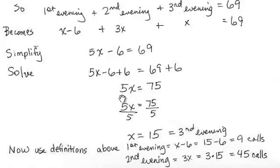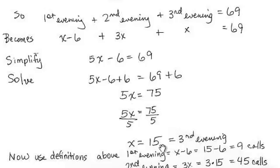We want to get X alone, so we're going to divide by 5. 5X over 5 equals 75 over 5. Five over five is one. One times X is X, and 75 over 5 is 15. So that's the number for the third evening.